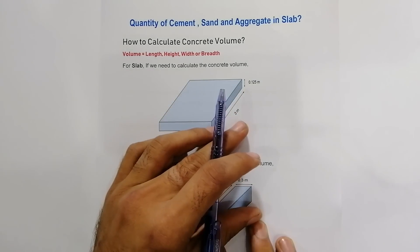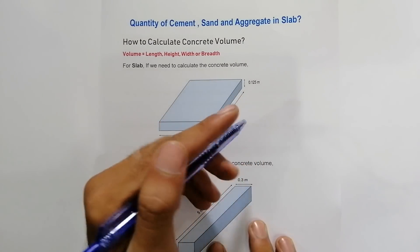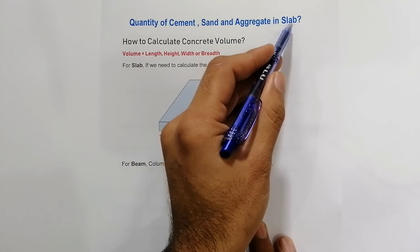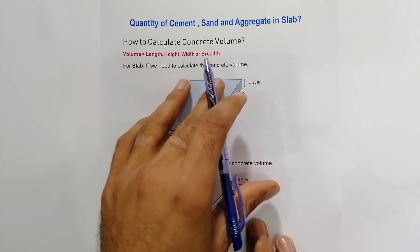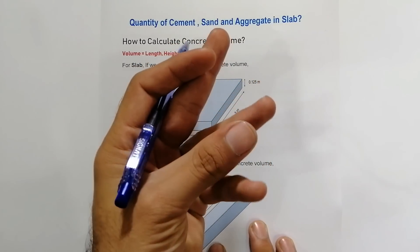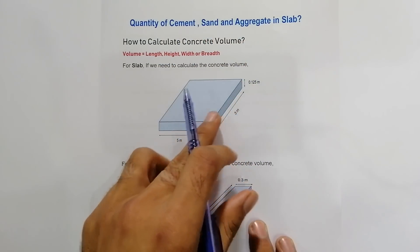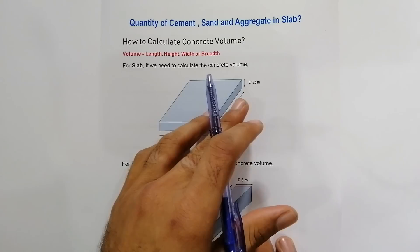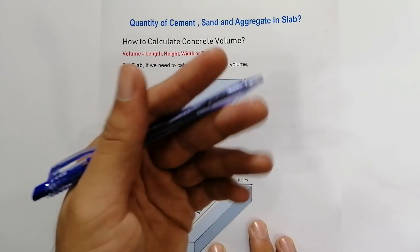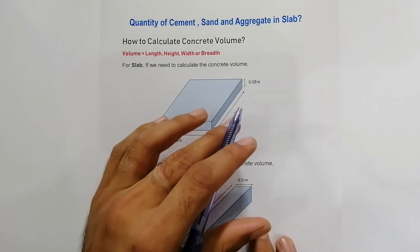Assalamu alaikum friends, this is Sami from Civil Engineers. Today in this video lecture I'm going to talk about how to calculate quantity of cement, sand, and aggregate in an RCC slab. You can also use the same formula and method to find the quantity of concrete for beam, column, etc., because this just depends on the volume of any structure.